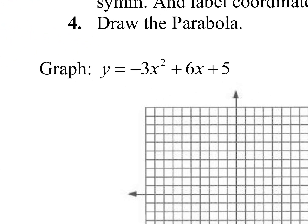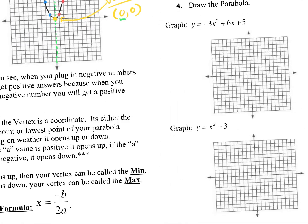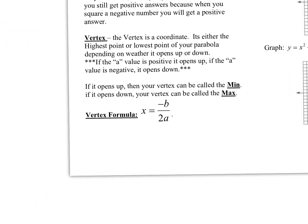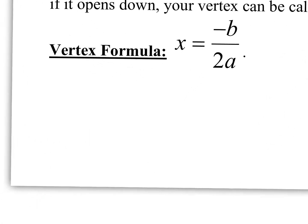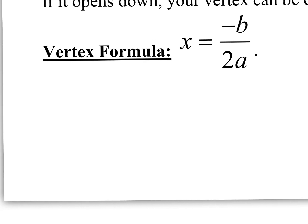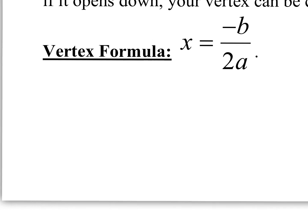So if I gave you an equation and said find the vertex — the most important point — how do we do that without a graph? You can't see the highest or lowest point without a graph, so you need to find the vertex using algebra. Memorize this formula: the vertex formula is x equals negative b over 2 times a.